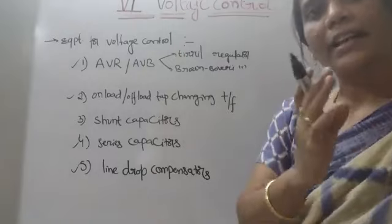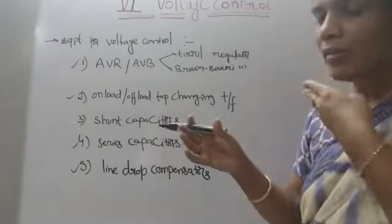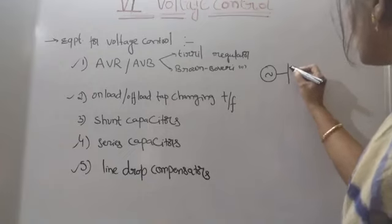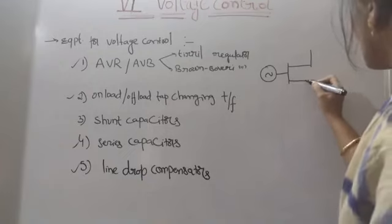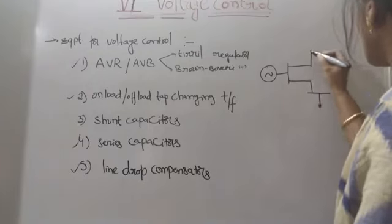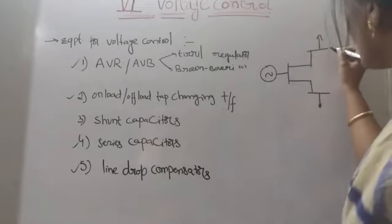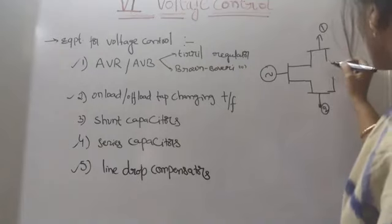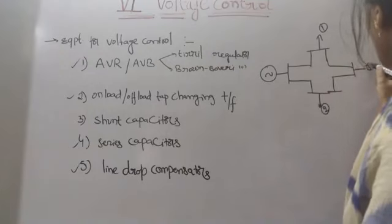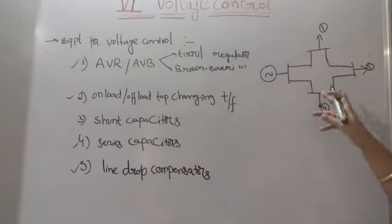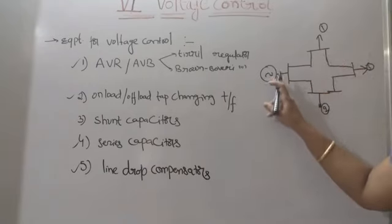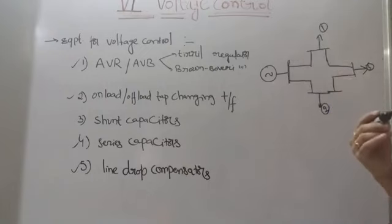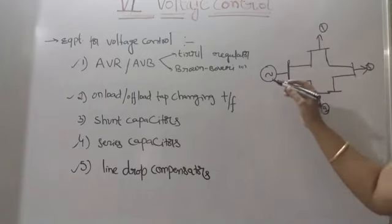The word itself indicates internal voltage control means you are controlling the voltage generating within the generator. For example, you consider this is your generator. These are the bus - bus one, bus two, bus three - the connection of power system. When voltage at the bus bar is not up to the reference voltage, you have to control the voltage at generating.